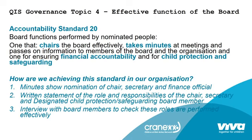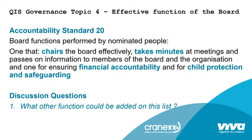Standard number 20 is about the board having nominated members who serve functions as chair, one who takes minutes, one responsible for financial accountability, and one responsible for child protection and safeguarding. Evidence includes minutes showing nomination of chair, secretary, and finance official, written statements of roles and responsibilities of those functions, and interviews with board members to check whether they appreciate, understand, and are effectively performing their roles. The discussion question is: what other functions could be added to this list?